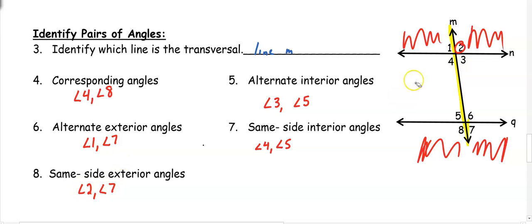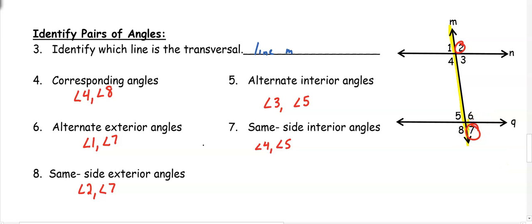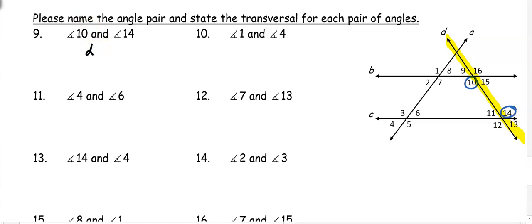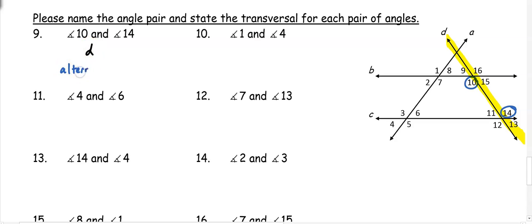Now let's determine what type of angle pair each set is and state the transversal if there is one. In number nine, we have angle 10 and angle 14. To find the transversal, we look at what line both angles are touching — both angles are touching line D, so D is our transversal. Looking at those angles between lines B and C, they're between the lines (interior) and on opposite sides of the transversal, so these are alternate interior angles.